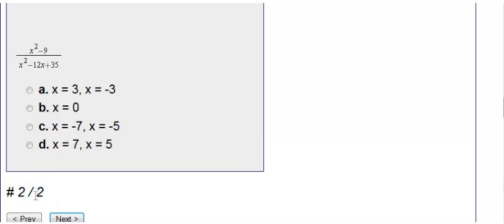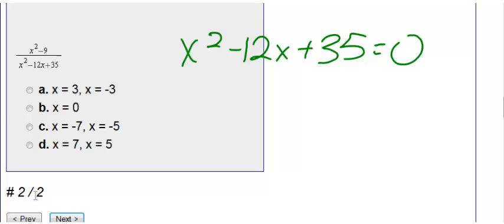Number 2. Again, we're determining what numbers make this undefined, so I don't care about the top. I'm just looking at the bottom. I have x squared minus 12x plus 35, and I'm setting this equal to zero. So I need to factor.